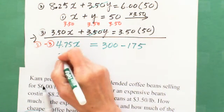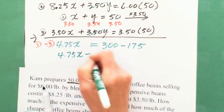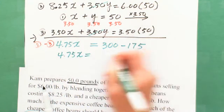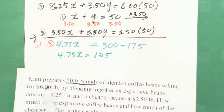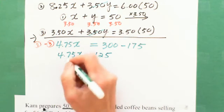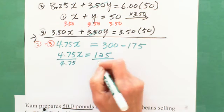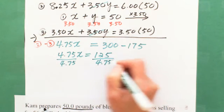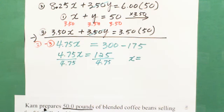So then we end up 4.75X equals 125, right? 125 divided by 4.75 for both sides. We can use the calculator to find this answer. 125 divided by 4.75, we got 26.3 pounds.